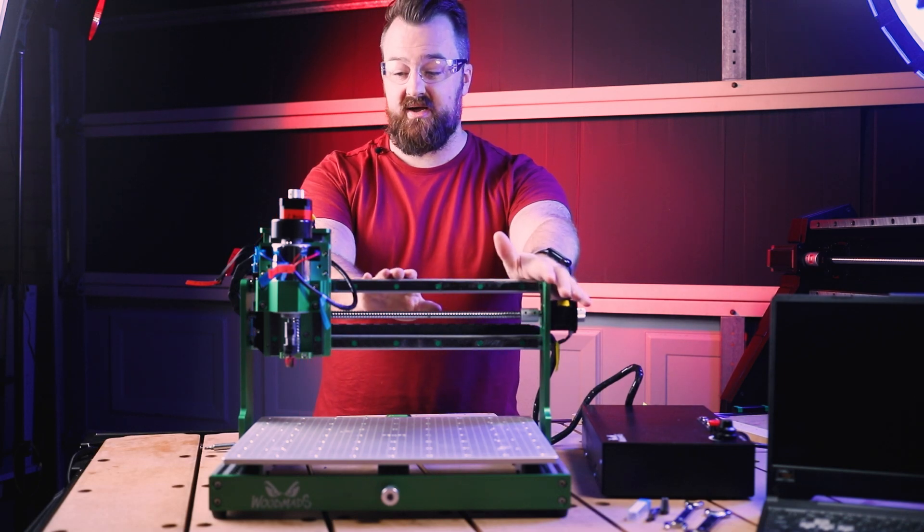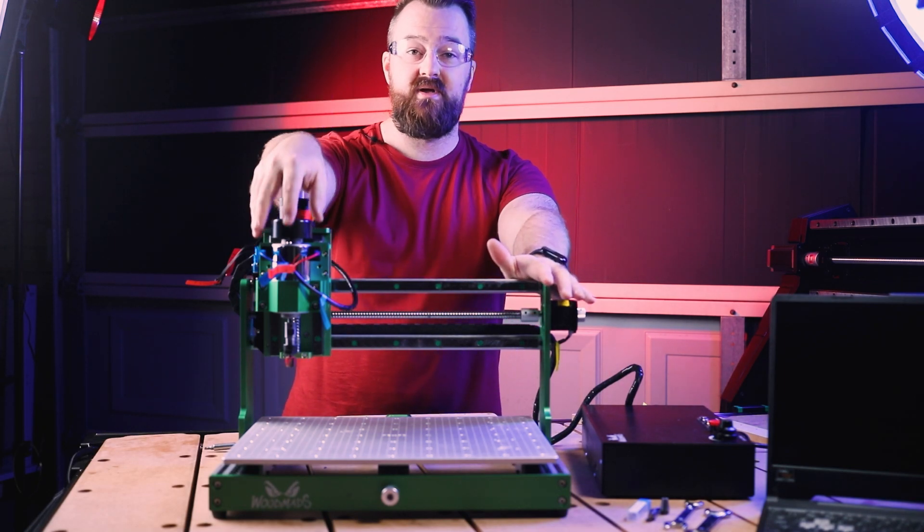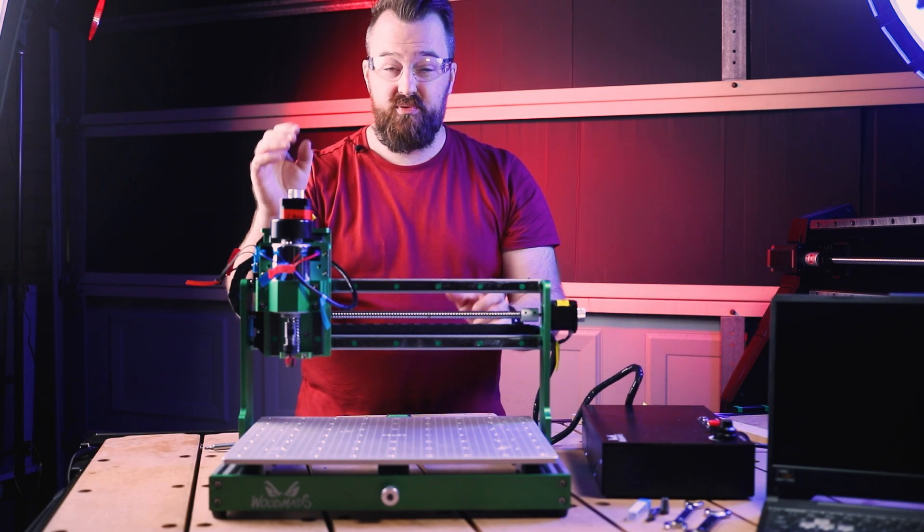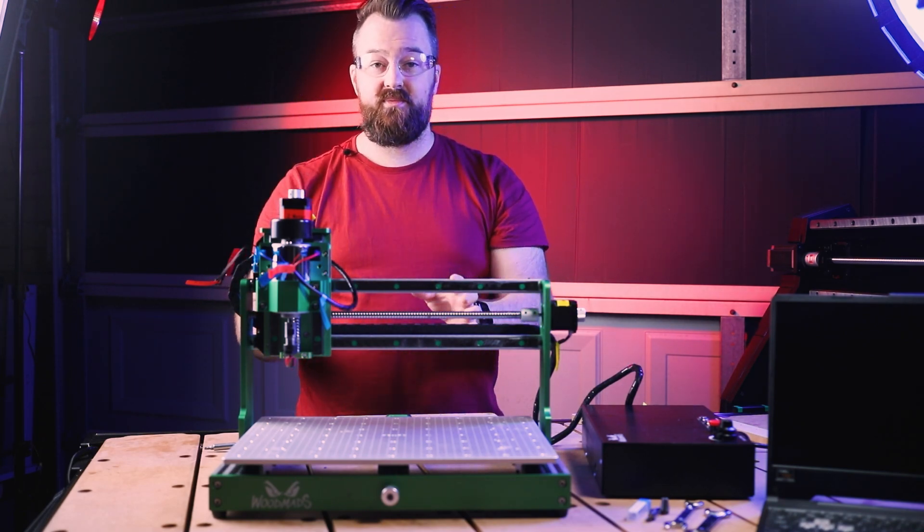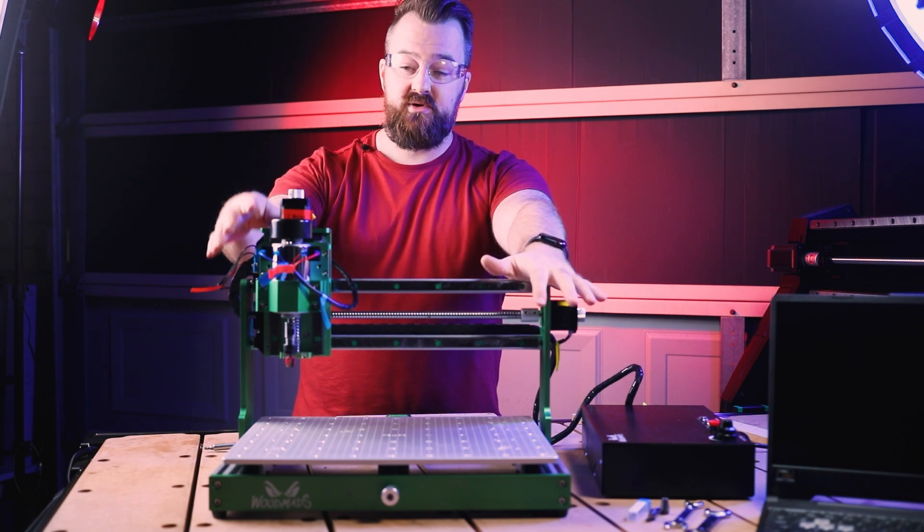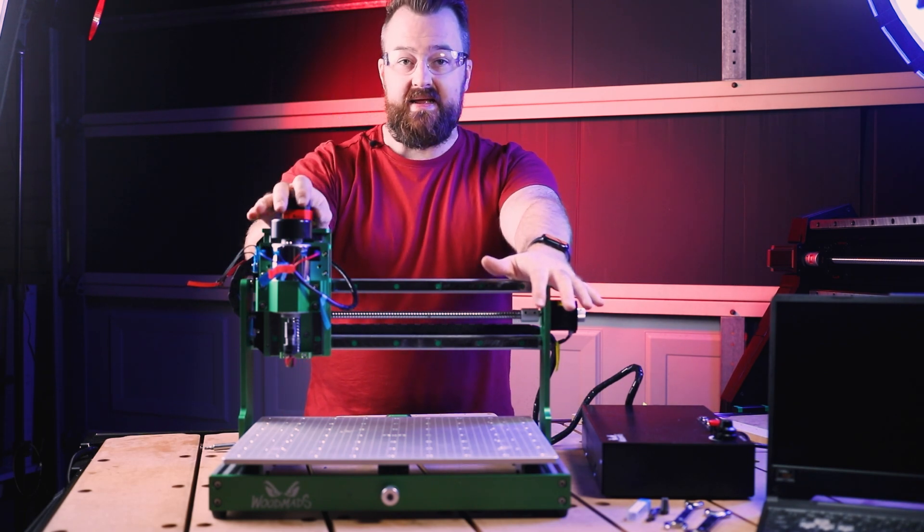Now this one comes with linear rails, they're HGR-15 linear rails, comes with a 300 watt spindle and comes pretty much assembled from the box. You just have to put together the vertical gantry, add on the spindle and then connect the wiring.